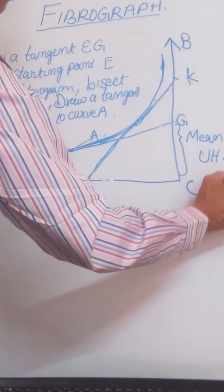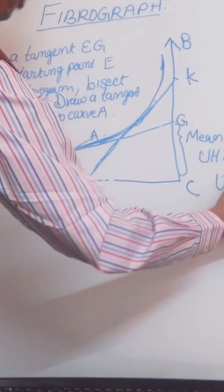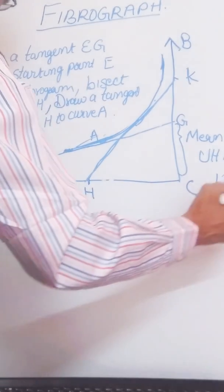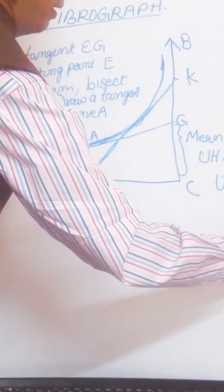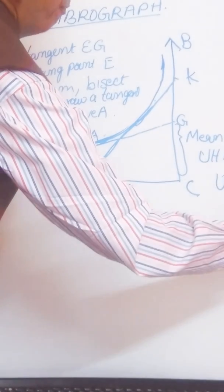Another information, uniformity ratio, if we want, then it is the mean length divided by upper half mean length into 100.